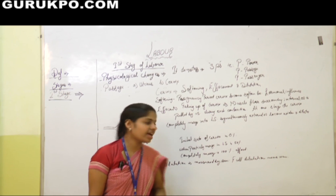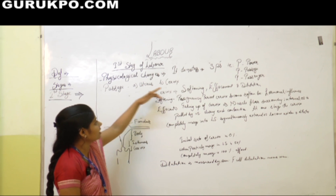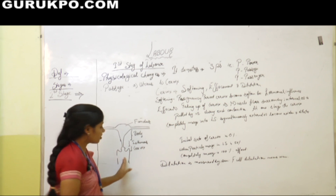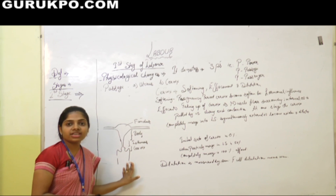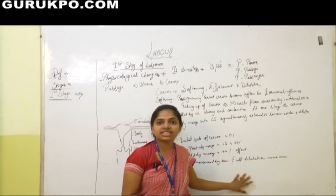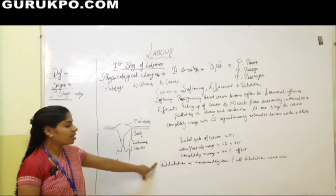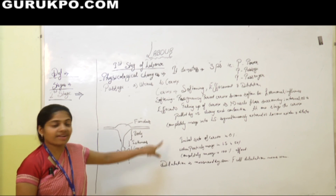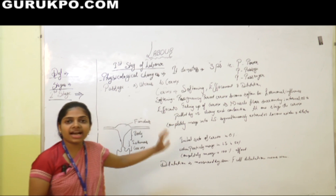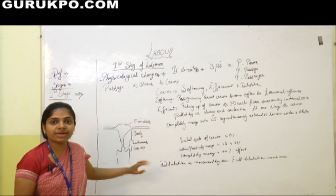In dilatation, the cervix continuously dilates and is measured in centimeters. Full dilatation means 10 centimeters. In a primae mother, effacement occurs first and then dilatation occurs. But in a multi mother, both effacement and dilatation take place simultaneously.